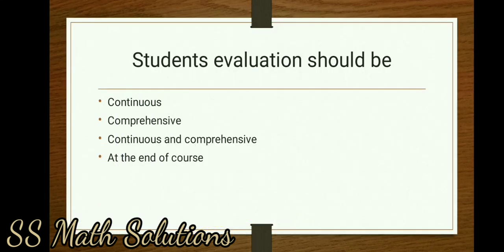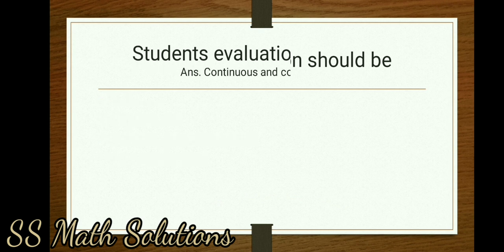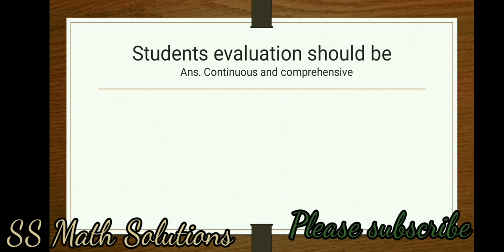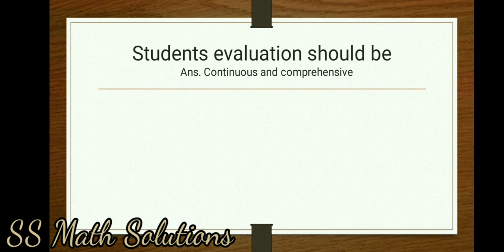First question: Students' evaluation should be — continuous, comprehensive, continuous and comprehensive at the end of course. The correct answer is: students' evaluation should be continuous and comprehensive.